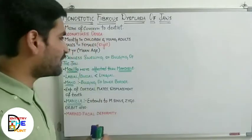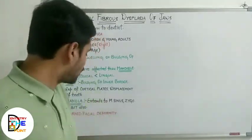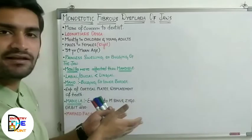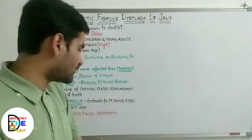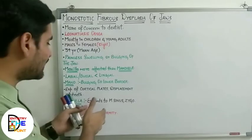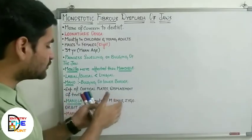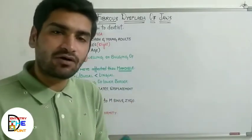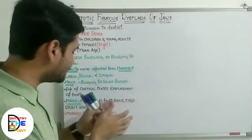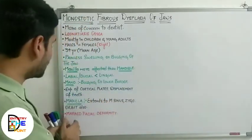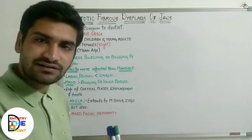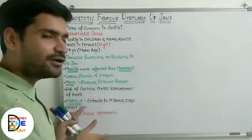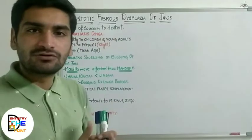The lesion mainly shows ground glass appearance. There will be expansion and distortion of cortical plates, displacement of teeth, and there may also be changes in the eruption pattern of the teeth. Regarding maxilla, if it is affected it can also extend to the maxillary sinus, zygomatic bone, and even orbital or periorbital areas. At last, there is going to be marked facial deformity or facial asymmetry.